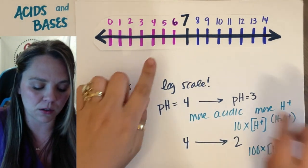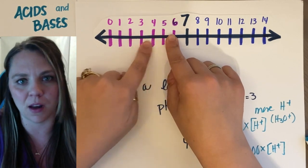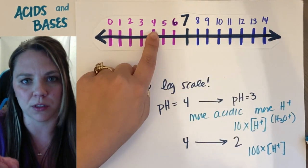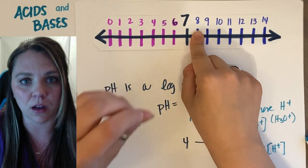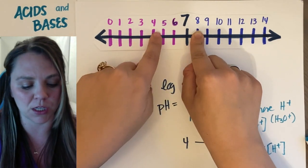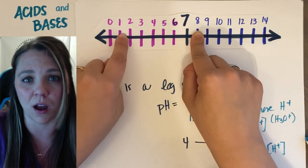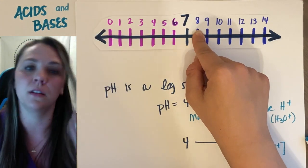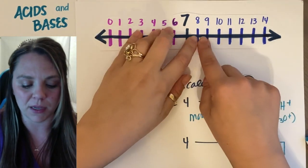So it may seem like, oh, whoop-de-doo, I changed my number just by two numbers on the pH scale. But that's logarithmic, that's exponential. So I'm changing it by a factor of 10, by a factor of 100. So you can see, same thing on the base scale.